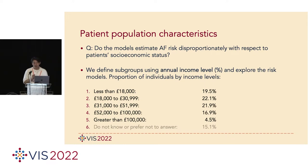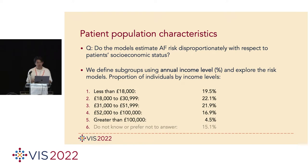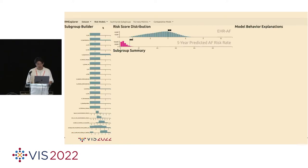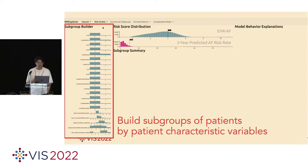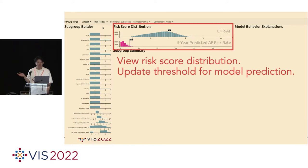One question we followed for the case study is: do those models estimate AF disproportionately with respect to patients' socioeconomic status? To answer this, we defined subgroups using patients' annual income levels and explored how the risk models predict different subgroups differently. We launched the system with the risk model and dataset. The left side shows the distribution of the characteristic variables and you can also build subgroups with that. On top, you can see risk score distributions and also update the threshold to make different model predictions.